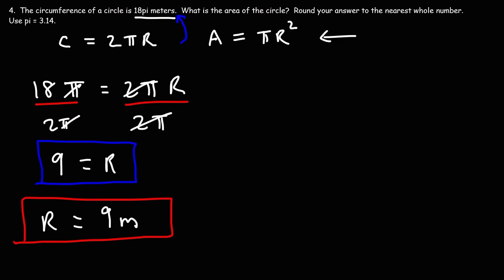Now let's use R equals 9 to calculate the area. Replacing R with 9 meters: 9 squared is 81, so the exact answer is 81 pi square meters. Replacing pi with 3.14: 81 times 3.14 is 254.34, which we round to 254 square meters.